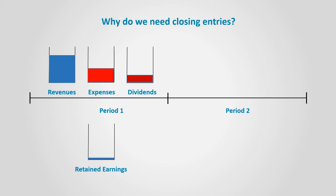Why do we need closing entries? We need closing entries to serve two purposes. The first is to update the retained earnings account to reflect the results of the period. The second is to reset the temporary accounts — which we called RED accounts: revenues, expenses, and dividends. Revenue accounts are going to be moved to retained earnings, adding to it, and the revenue account is reset to zero from the start of the new period.